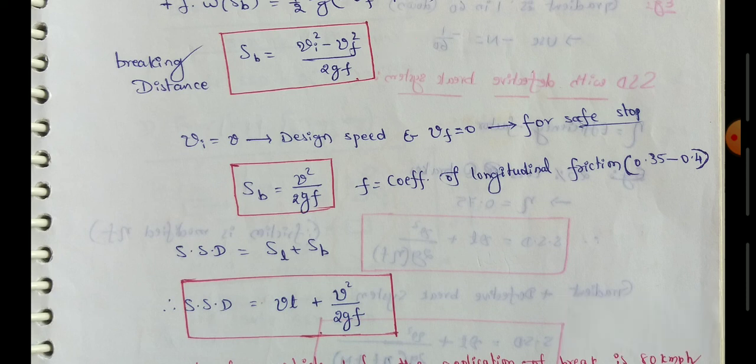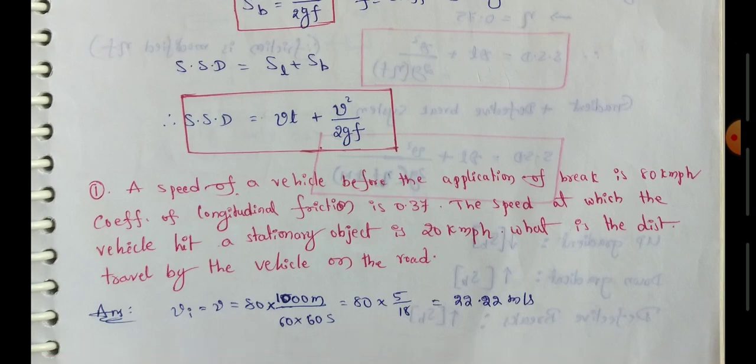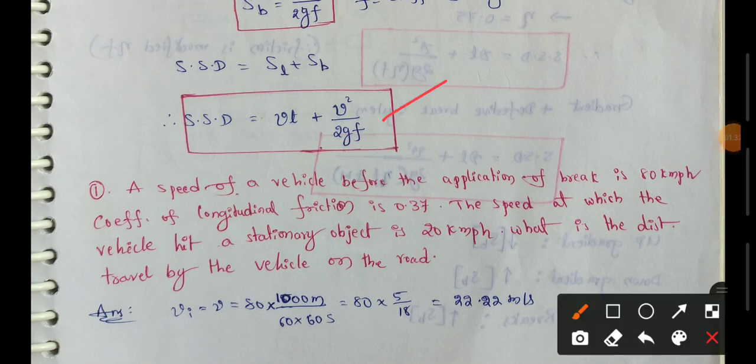So VF value. So here we find out, we have a SSD formula. VT plus V square. So VI square minus VF square, VF square by 2GF. So we use this formula. So we have SSD value.